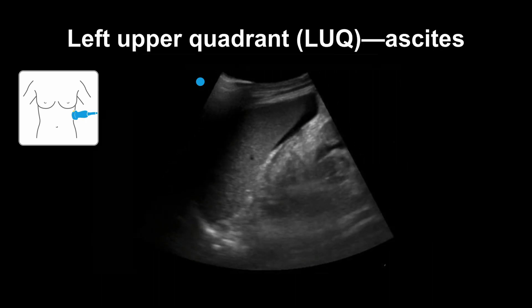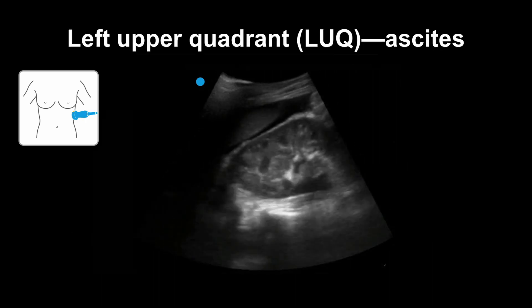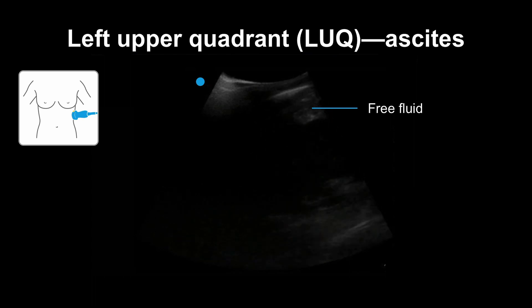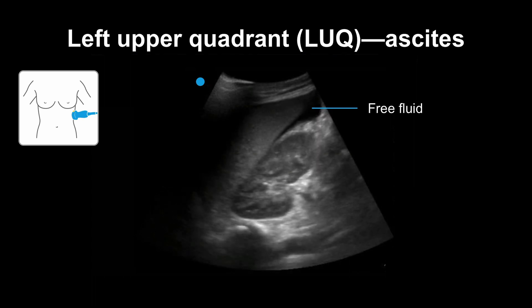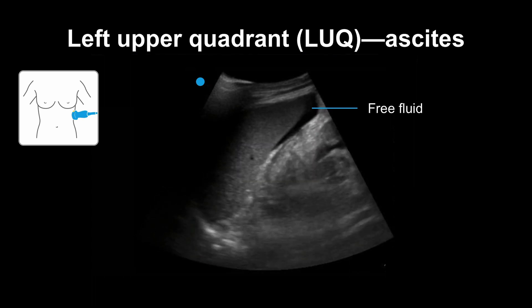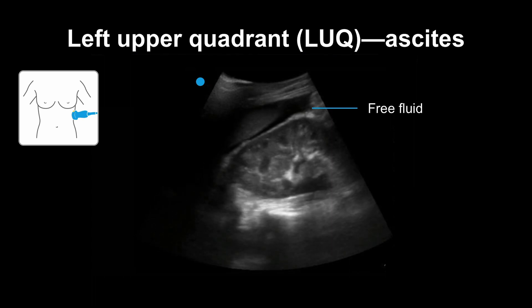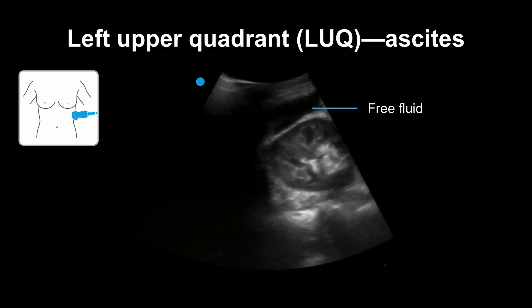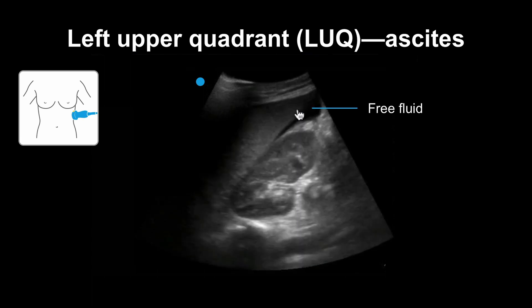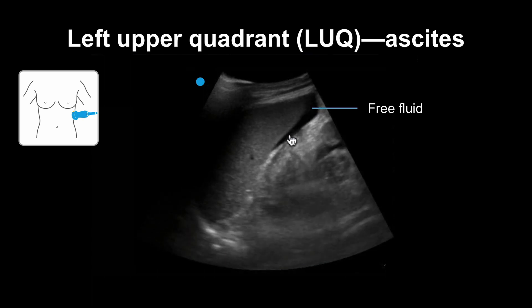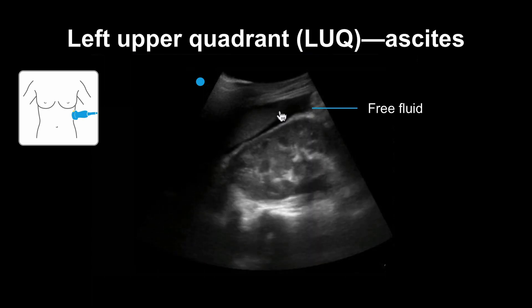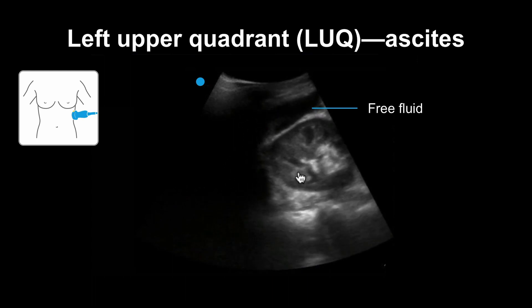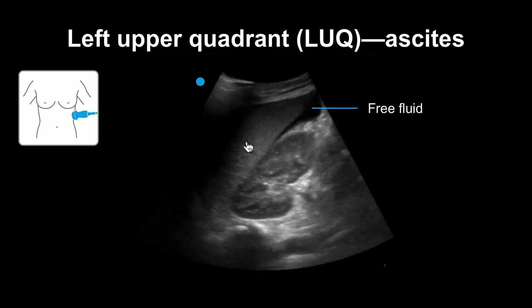You can see it either between the spleen and the kidney or above the spleen adjacent to the diaphragm. Here is a left upper quadrant with fluid. The fluid appears free flowing and not contained by any hyperechoic border. It has sharp edges as it fills the potential space between the kidney and the spleen.